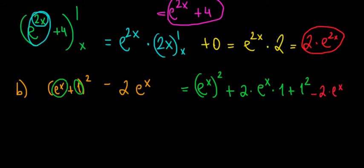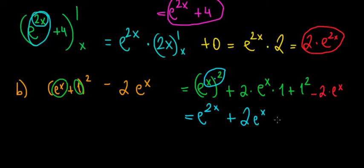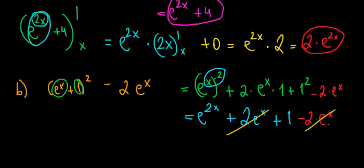Let's expand this further. For e to the power of x, raised to the power of 2, we multiply the exponents — that gives e to the power of 2x. So we have e to the power of 2x, plus 2 times e to the power of x, plus 1, minus 2 times e to the power of x. We notice that 2 times e to the power of x and minus 2 times e to the power of x cancel out.